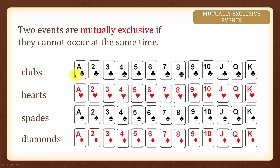In each of these suits we have A, 2, 3, 4, 5, 6, 7, 8, 9, 10, J, Q, K. And hence there are 52 cards in this deck of cards.